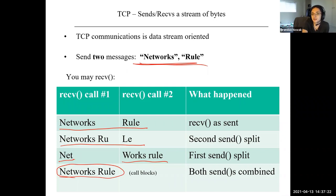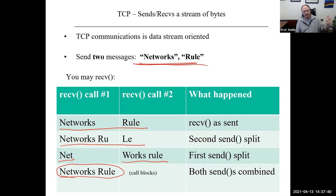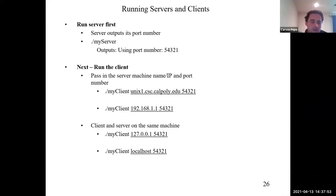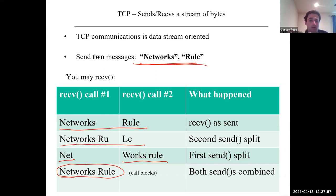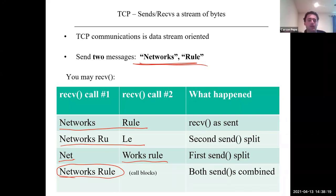The recv call is blocking, but if there's data available it returns immediately with that data. If two things arrive simultaneously or within a short window, you get both. The recv call won't hold open waiting for more; whatever is in the kernel buffer at that moment is what you receive.